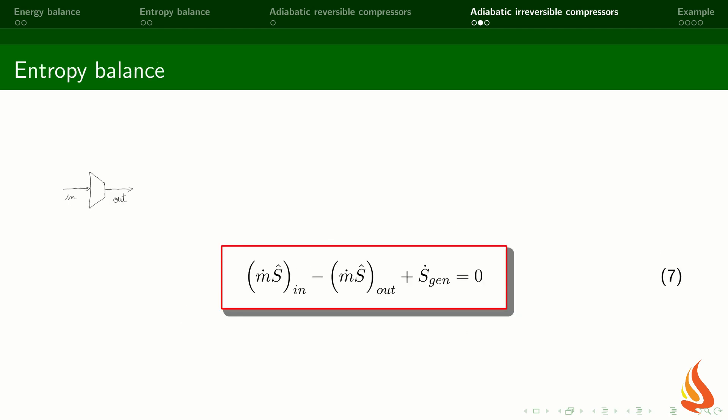Moving to the entropy balance, the entropy generation term is not equal to zero. The consequence is that the process is not isentropic.